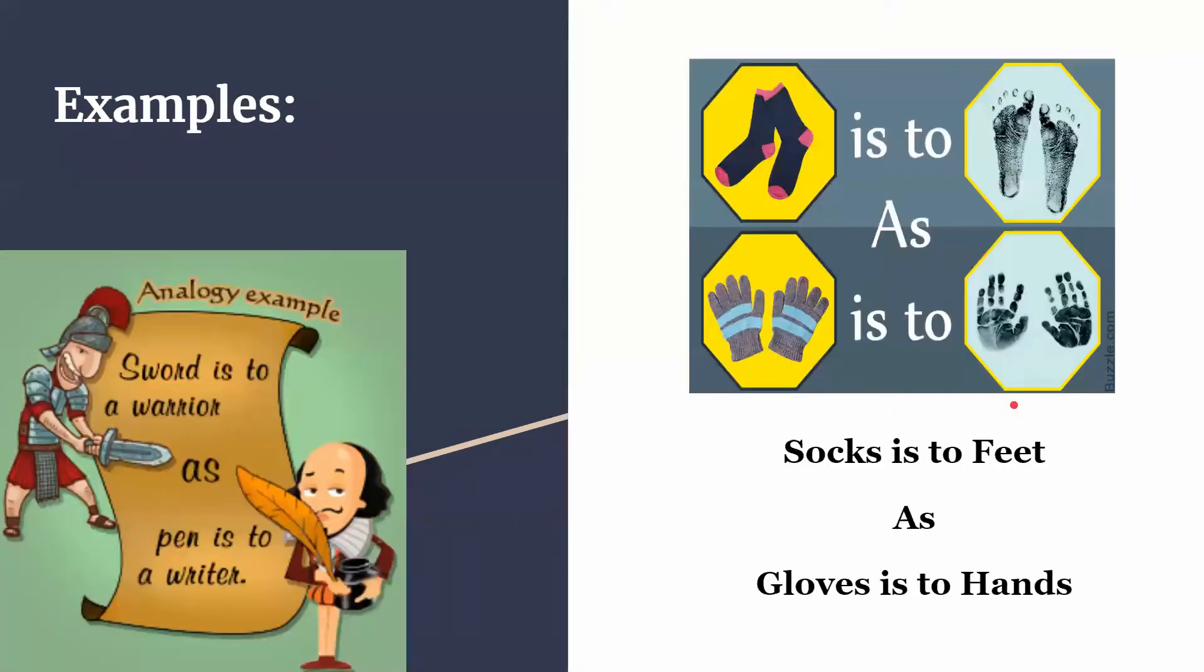Here are some common examples. Sword is to a warrior because warriors use a sword, as pen is to a writer because writers use a pen. Then we have socks is to feet because we wear socks on our feet, as gloves is to hands because we wear gloves on our hands.